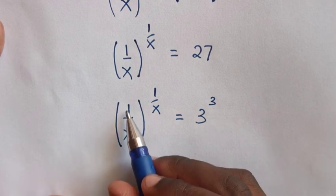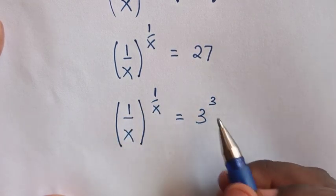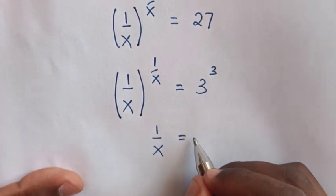Comparing the base and the power, we have 1 over x equals 3 and the exponent 1 over x equals 3. Therefore, 1 over x equals 3.